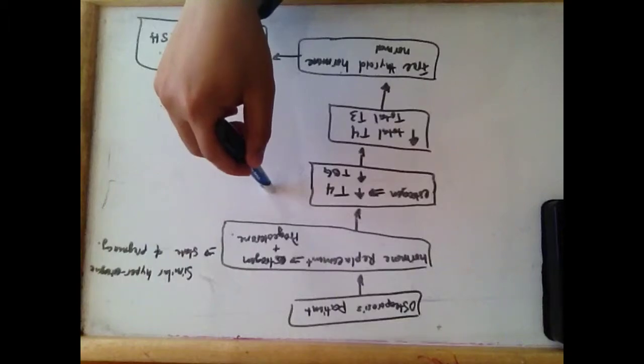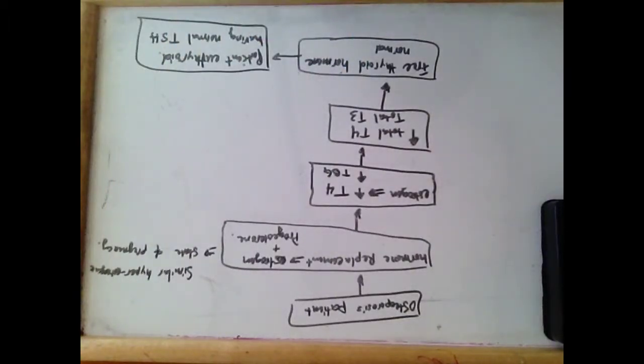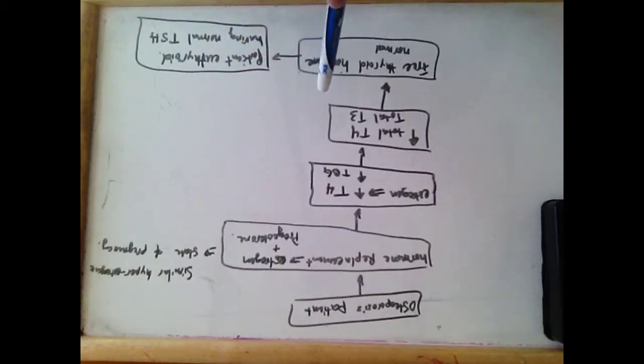The estrogens in the hormone replacement therapy increase T4 and decrease the breakdown of TBG, which is thyroid binding globulin. So the increase in thyroid binding globulins increases the total T4 and T3.